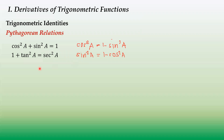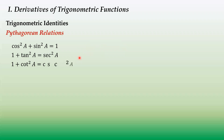Another Pythagorean identity is 1 plus tangent squared a equals secant squared a. By transposition, secant squared a minus tangent squared a equals 1, or secant squared a minus 1 equals tangent squared a. The last Pythagorean relation is 1 plus cotangent squared a equals cosecant squared a. Similarly, cosecant squared a minus cotangent squared a equals 1, and cosecant squared a minus 1 equals cotangent squared a.